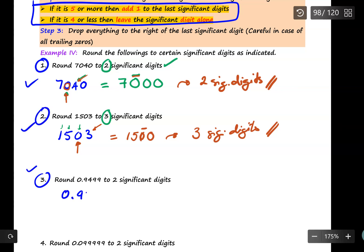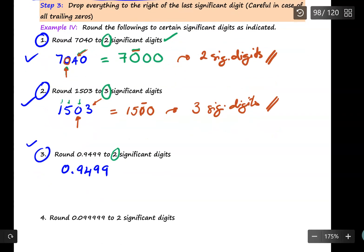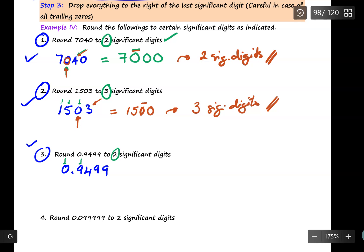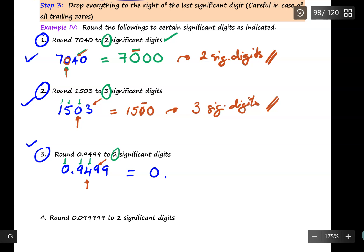Next: round 0.9499 to two significant digits. The leading zero is not significant, so your first significant digit is 9 and your second is 4. You must round the 4 by looking at the digit next to it, which is 9. Nine is greater than five, so you add one to the 4, making it 5. The answer is 0.95, which gives two significant digits.